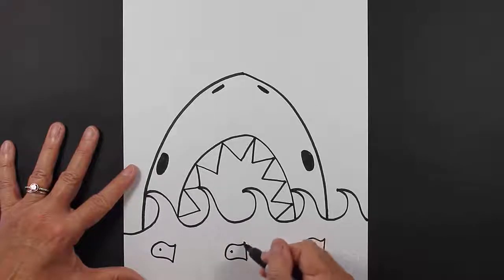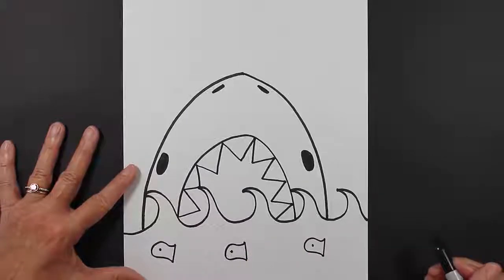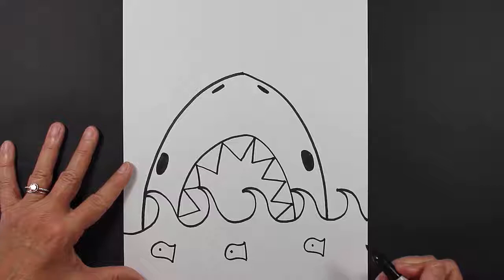They're very, very simple. So you make a straight line, and then you make a curved line that comes around, and then comes back to that initial line, and then I just put a little dot for the eye.